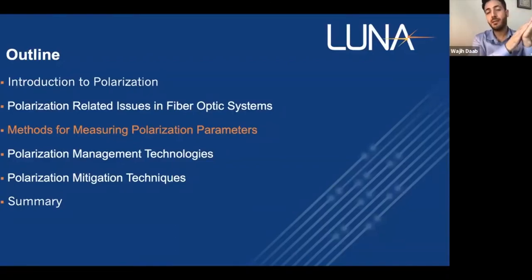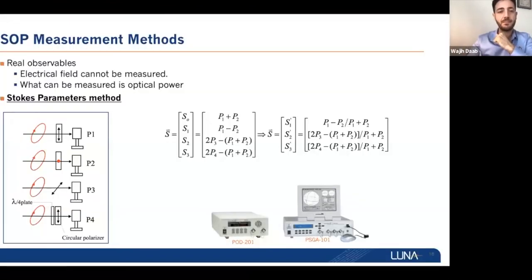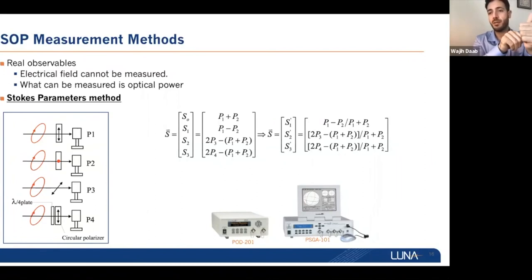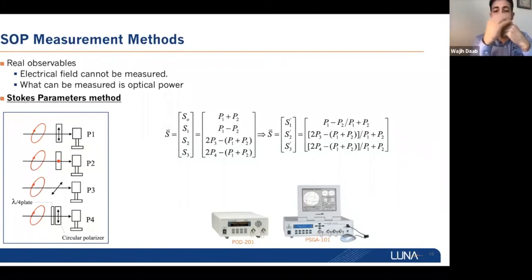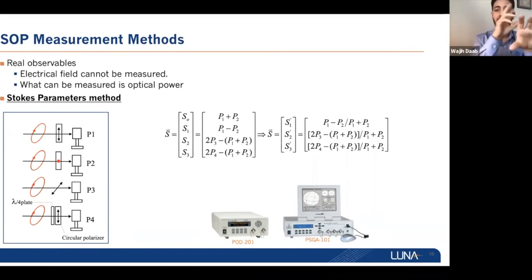Here at Luna, there are multiple instruments and technologies to measure polarization-related parameters. For state of polarization, the most common method is the Stokes parameter method. Customers use four powers — P1, P2, P3 — measuring signal power at different orientations of the polarizers. From this we construct the Stokes vector and plot it on the Poincaré sphere, so you can easily know the state of polarization.